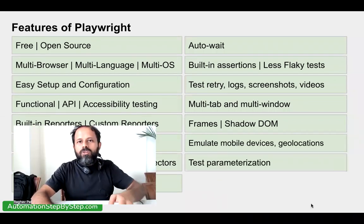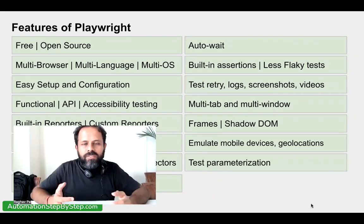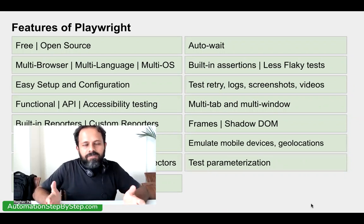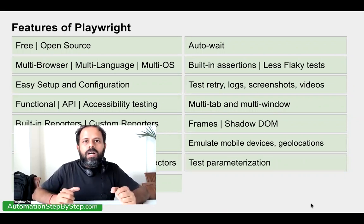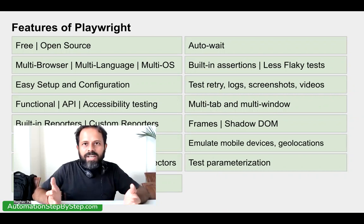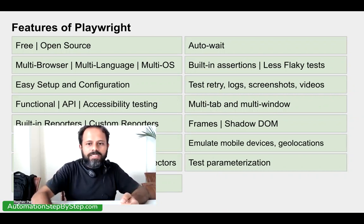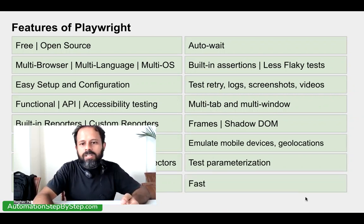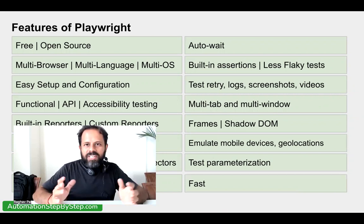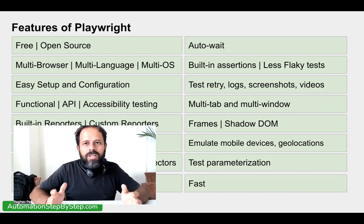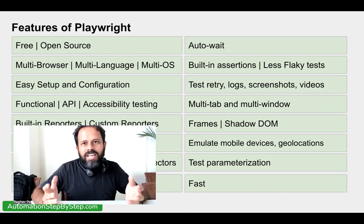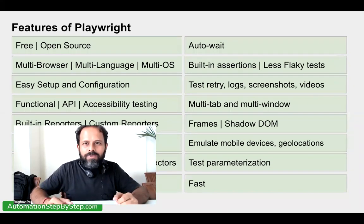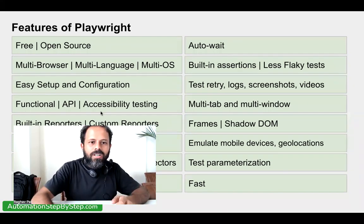We can also do parameterization — we can add variables, do data-driven testing, or use external files like a CSV file to get our data and do testing. Playwright is also very fast, and with parallel testing it becomes even faster.